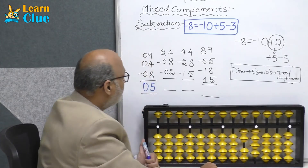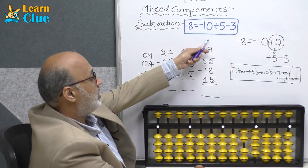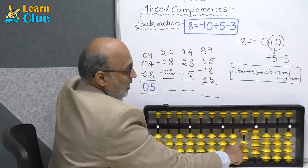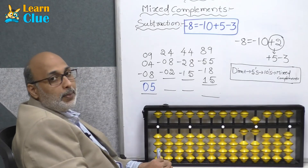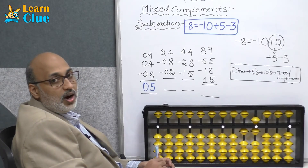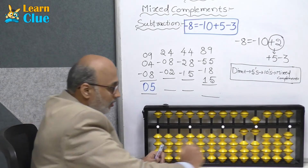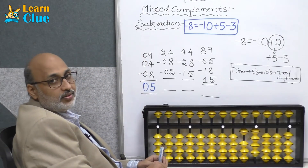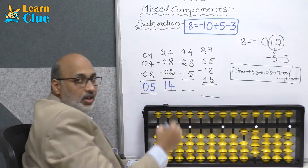Next problem: 24 minus 8. Minus 8 is nothing but the same: minus 10 plus 5 minus 3. Apply the same: minus 10 plus 5 minus 3. Now they are asking minus 2. How to do minus 2 here? Who is the friend of 2 in 5's complements? It's 3. So: plus 3 minus 5. The answer is 14.